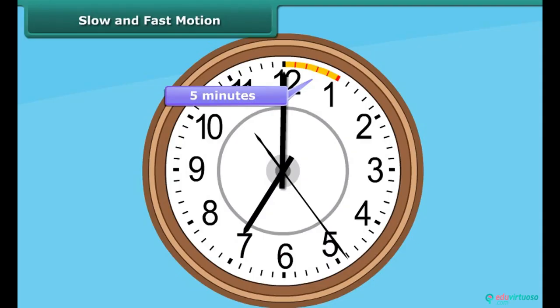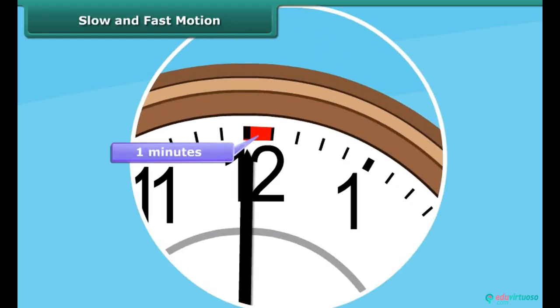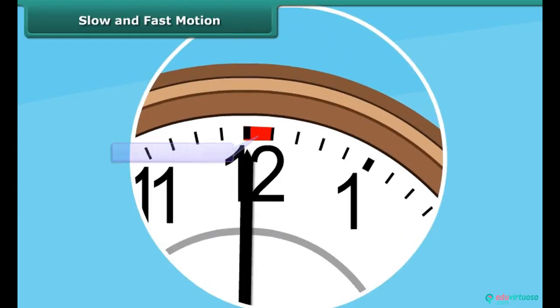Observe the dial more closely and you will find that it has 60 smaller divisions in it. A single small division represents 1 minute. The longest needle which moves the fastest is known as the second hand. It completes one revolution in 1 minute.